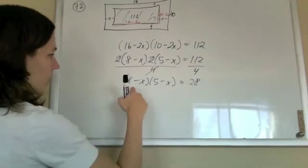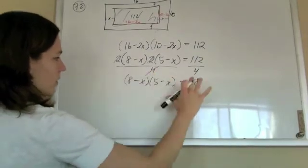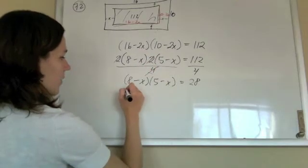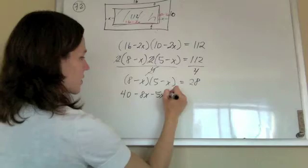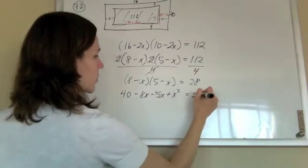Okay, now we're just going to solve this. So FOILing this, I've got 40 minus 8x minus 5x plus x squared equals 28.